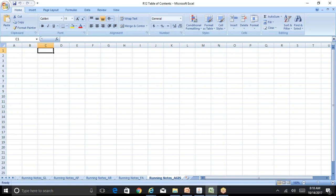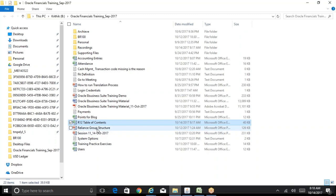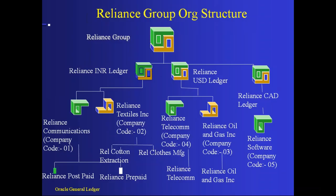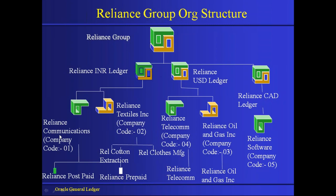Let me open the Reliance group structure. Intercompany — as the name itself says — is a transaction between two or more different legal entities. For example, a transaction between company 01 and 04, that is Reliance Communications and Reliance Telecom, or a transaction between 01 and 03 within or across ledgers.